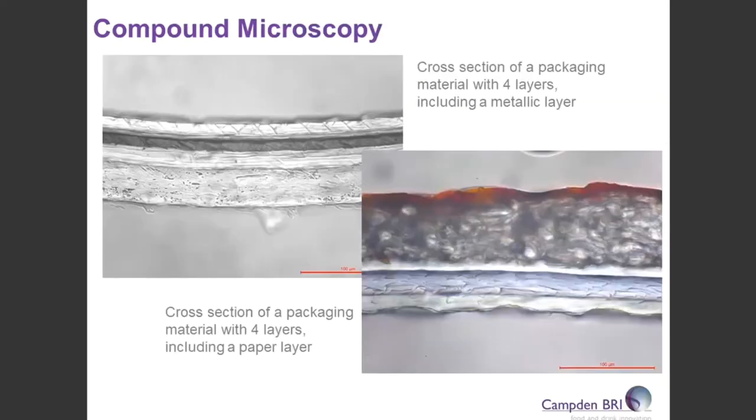So first up, we've got determining the number of layers. Both of these images are cross sections through packaging that include polymers. And we can see here that we've got one, two, three, four layers in this first top image. And this is a multi-laminate metallic pouch.